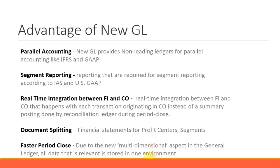There is also a multi-dimensional aspect to the general ledger with NewGL. Everything is stored in a single table, in one environment. At period end, you can quickly close out all the information because you don't have to look at multiple tables to reconcile. That is another advantage — faster period close. These are some of the advantages of having NewGL.